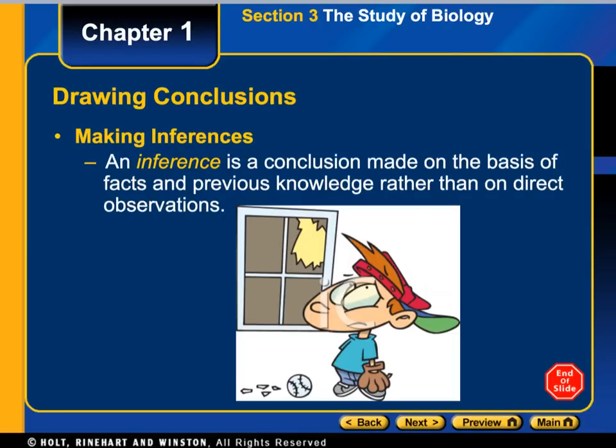One thing we need to make sure we understand is the difference between an inference and an observation. An inference is a conclusion based on your observations. For example, looking at the picture, an observation would be: the window is broken, the ball is on the floor, there's glass on the floor. An inference would be: the boy threw the ball through the window and is upset — that would be your conclusion based on the facts.